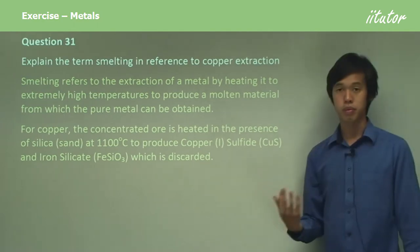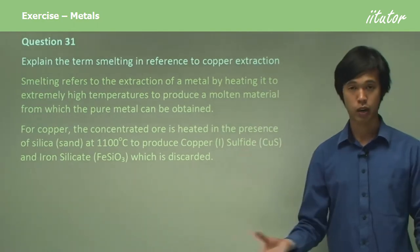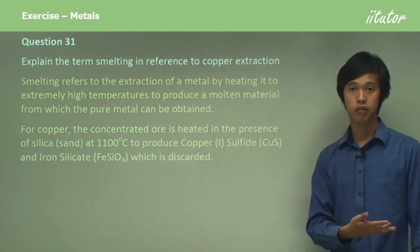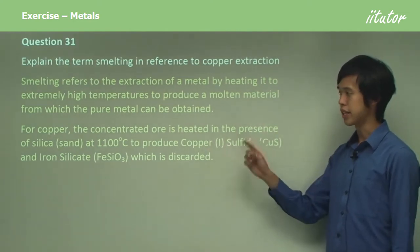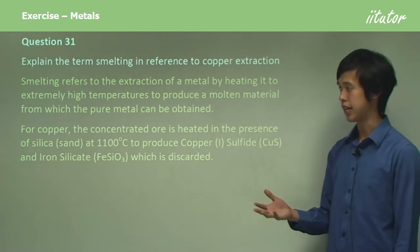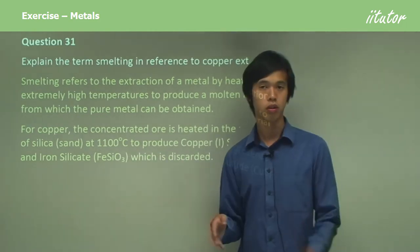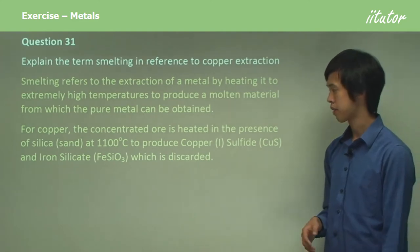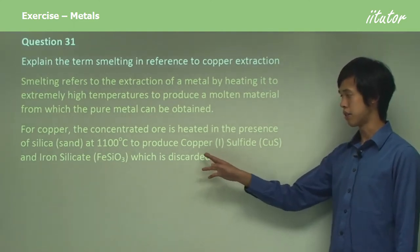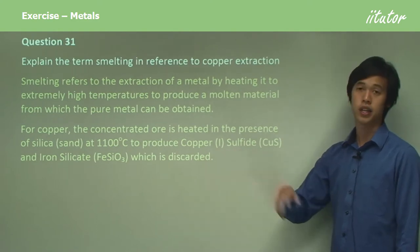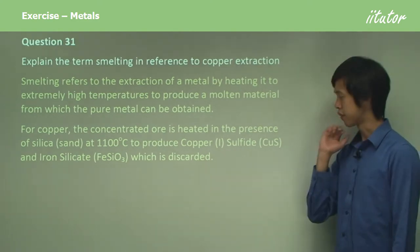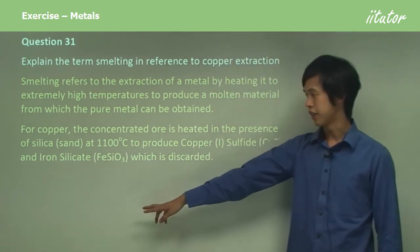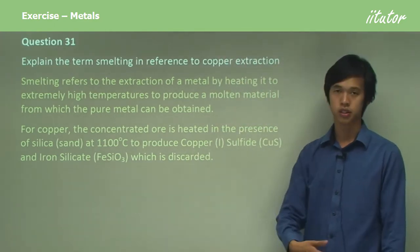For copper — remember that we studied copper refinement as one of our sections of study. The concentrated ore, after the froth flotation part, is heated in the presence of silica sand — ordinary beach sand — at 1,100 degrees Celsius. This produces copper 1 sulfide, where copper has a valency of 1, giving us CuS. It also forms iron silicate, FeSiO₃, which is discarded.